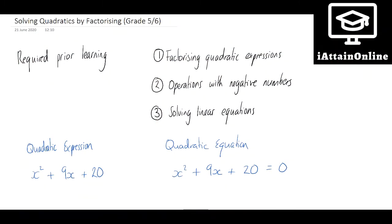Before we go into how you actually do these, there are a few areas that you need to be comfortable with in order to do this work. The first one is to factorise a quadratic expression, the second one is operations with negative numbers, and it's also useful to be able to solve linear equations as well. So if you are unsure about how to do any of those three areas, I suggest you go away and have a look at those before having a look at this one, otherwise this might confuse you.